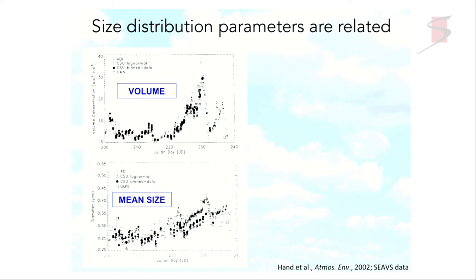I'd like to talk a little bit about how size distribution parameters are related. These are timelines from a study we did in Great Smoky Mountains National Park — I can show you recent data with very similar characteristics. We've looked here over some number of weeks measuring aerosol size distributions, getting volume concentrations out of those size distributions, and you can see this variability captured in those measurements. Meteorologically we know what's going on: there was a time when the remnants of a hurricane passed through the site, cleaning it out, preceded by a strong stagnation event where aerosol built up to very high mass concentrations. The mean size responds — it only gets really large when we have this kind of large mass loading. Otherwise the mean size tends to be fairly low under this kind of variability in total mass or volume.